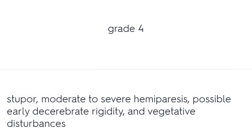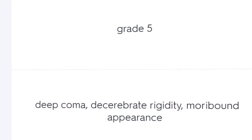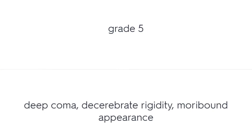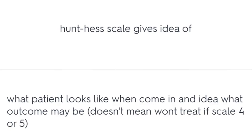Grade 4: stupor, moderate to severe hemiparesis, possible early decerebrate rigidity and vegetative disturbances. Grade 5: deep coma, decerebrate rigidity. The Hunt-Hess scale gives an idea of what the patient looks like on arrival and what the outcome may be.